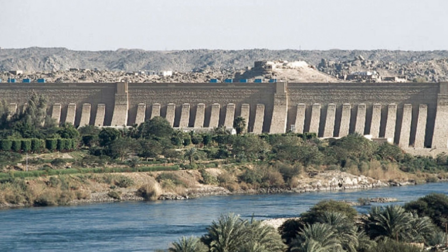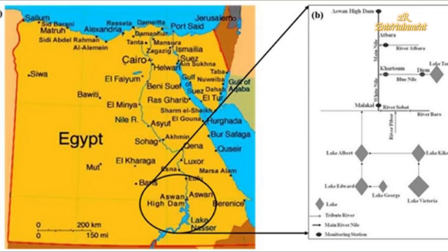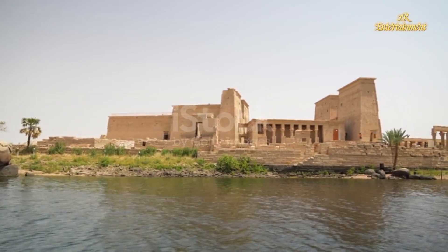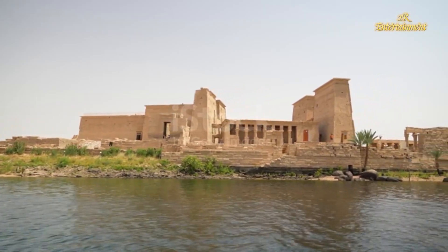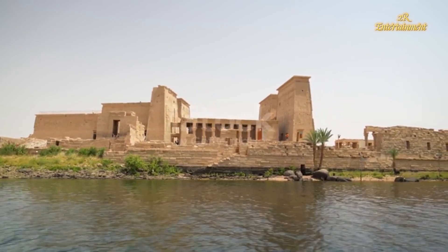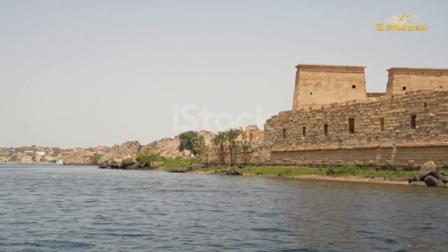In the mid-20th century, the idea of a larger dam took shape. Under the leadership of Egyptian President Gamal Abdel Nasser, the Aswan High Dam project was conceived as a symbol of national pride and a tool for economic development. Construction of the high dam began in 1960 and was completed in 1970, with assistance from the Soviet Union after funding from Western powers was withdrawn due to political tensions.